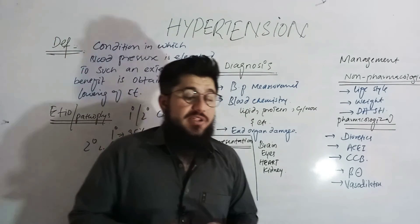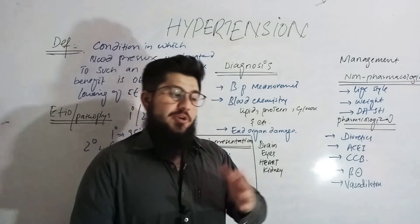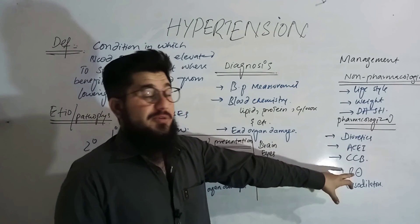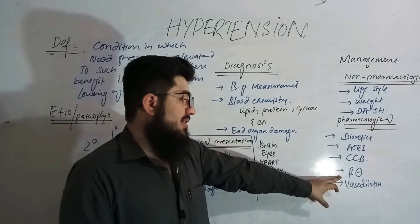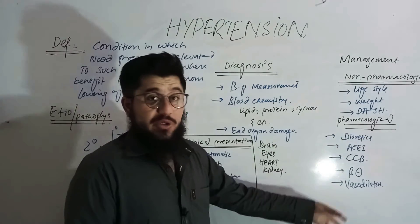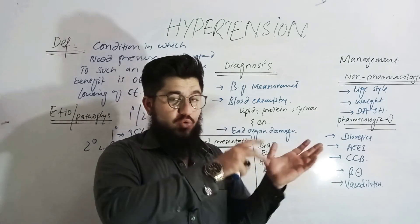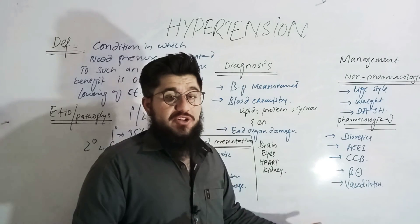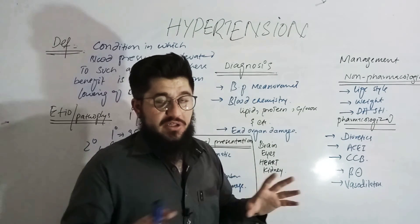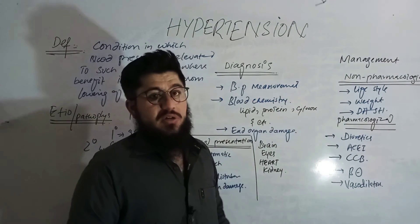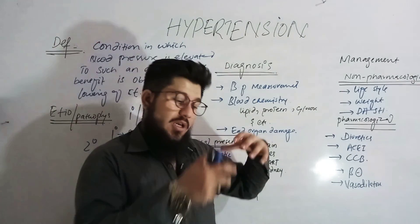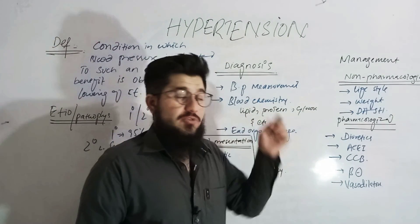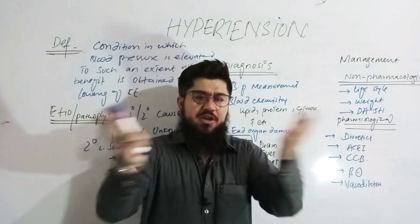Regarding pharmacological management, it varies from patient to patient. Commonly used drug classes include diuretics, ACE inhibitors, angiotensin blockers, beta blockers, and vasodilators. For details on each drug and their mechanism of action, search the detailed lectures on our channel. If you have any confusion, drop it in the comment box — thank you for watching.